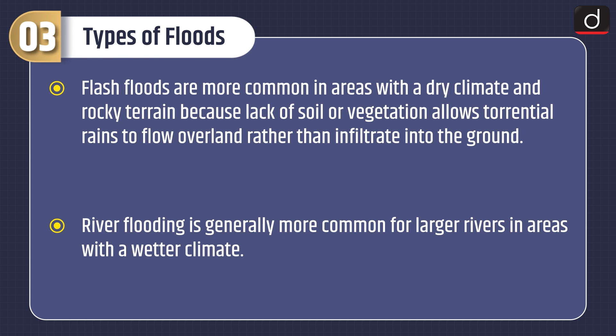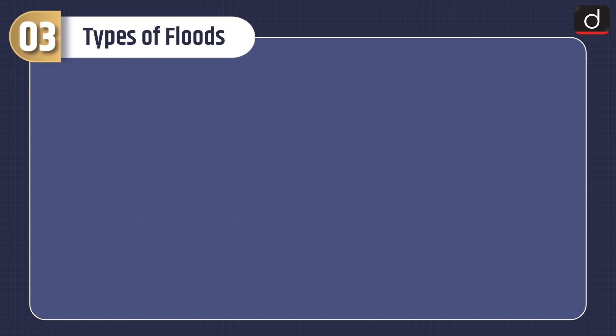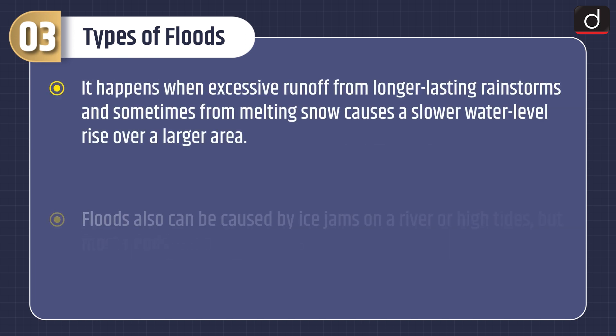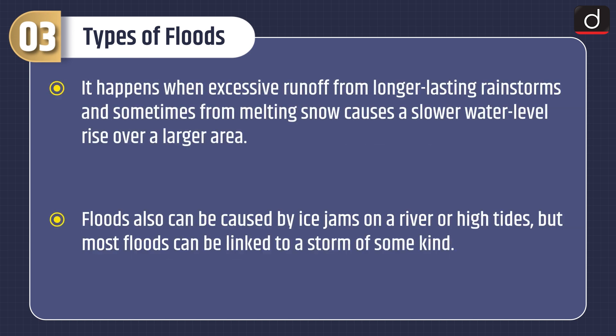River flooding is generally more common for larger rivers in areas with a wetter climate. It happens when excessive runoff from longer-lasting rainstorms, and sometimes from melting snow, causes a slower water level rise over a larger area. Floods can also be caused by ice jams on a river or high tides, but most floods can be linked to a storm of some kind.